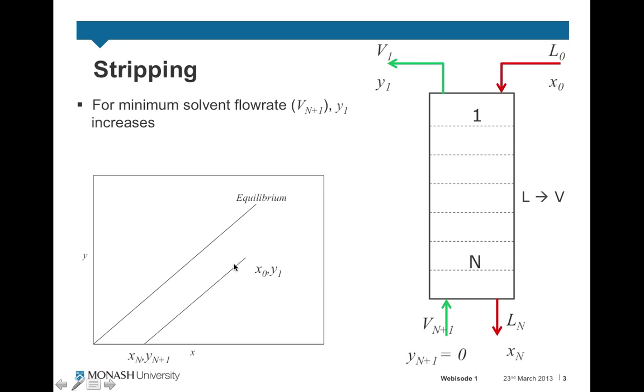When we look at our operating line for stripping, it always sits underneath the equilibrium line. The top end of the operating line corresponds to the top of the column, and the bottom end of the operating line corresponds to the bottom of the column.